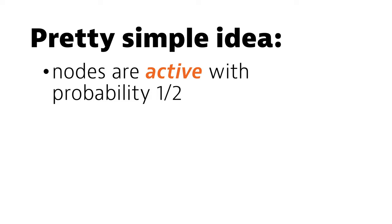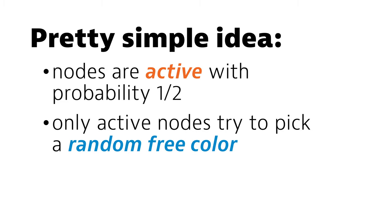Running nodes flip coins to decide if they are active in this round. And only active nodes try to pick random free colors. And you keep your colors if you are successful. That's it! This is the whole algorithm.